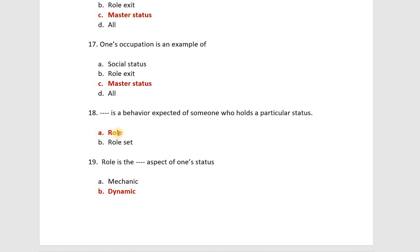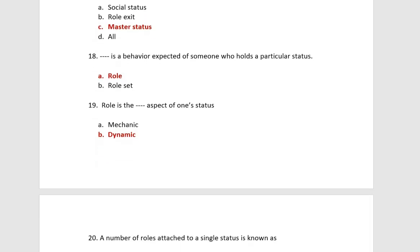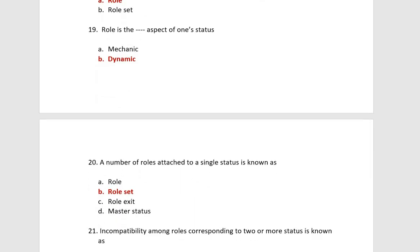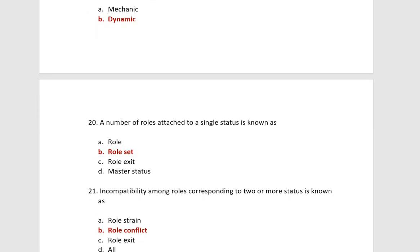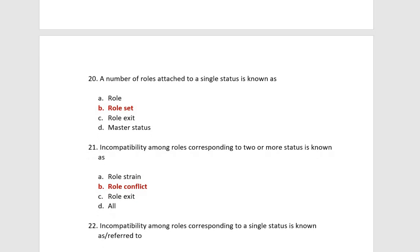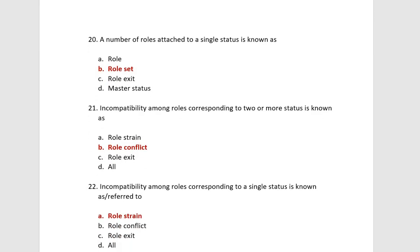What is a role? A role is a behavior expected of someone who holds a particular status. A number of roles attached to a single status is known as a role set. This is the definition of role set.